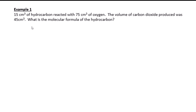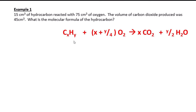Let's start with Example 1, about halfway down page 9. In this example, 15 cm³ of hydrocarbon reacted with 75 cm³ of oxygen, and the volume of carbon dioxide produced was 45 cm³. The question asks: what is the molecular formula of the hydrocarbon? First, we write down the general equation CxHy + (x + y/4) O2 → x CO2 + y/2 H2O, then note the volume ratios: 15 of the hydrocarbon, 75 of oxygen, and 45 of carbon dioxide.